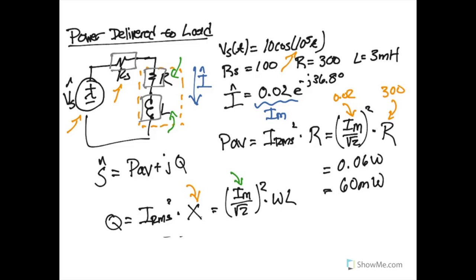Our values here are going to be 0.02 for our magnitude current. ω here is going to be 10 to the 5 because that is our frequency, and L is going to be 3 millihenries. The resulting reactive load is 0.06. Remember the units for a reactive load are VARs. So it will not be watts, but it will be in volts, amps, reactive. So 0.06 VARs, which you could also write as 60 millivar.